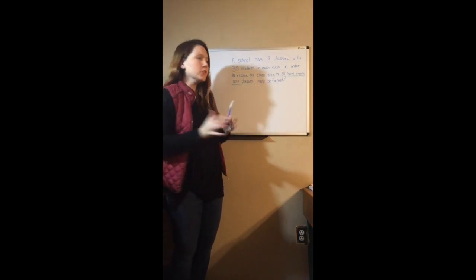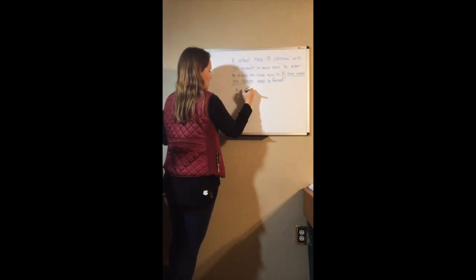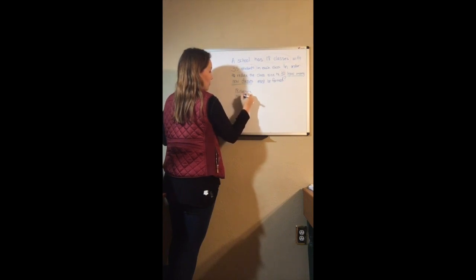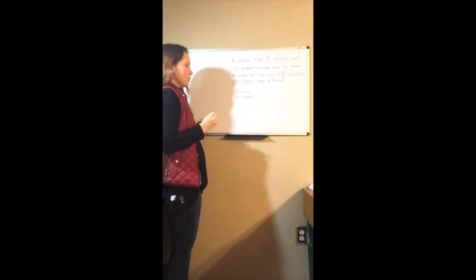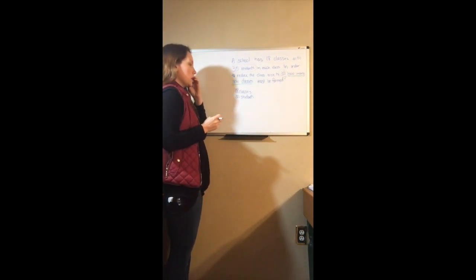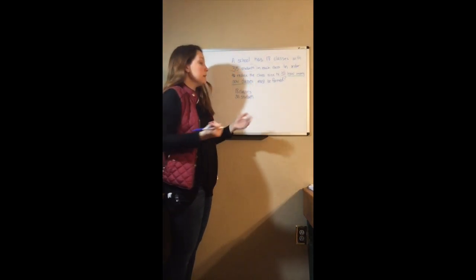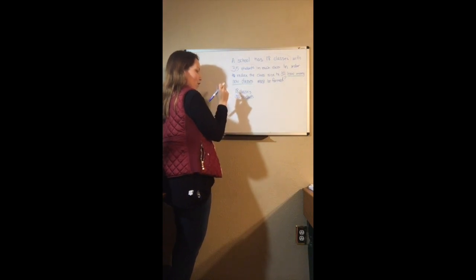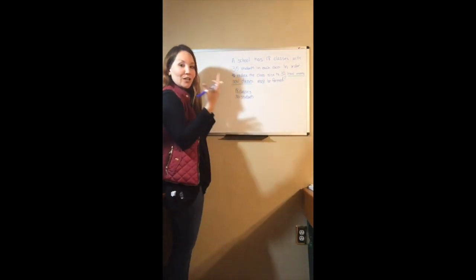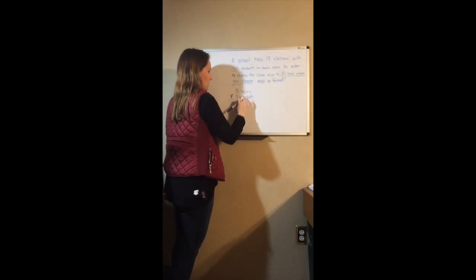First of all, we have 18 classes with 35 students per class. In order to reduce the class size to 30, I first need to figure out how many students there are in total. If it's 18 classes with 35 students per class, that sounds like multiplication to me.